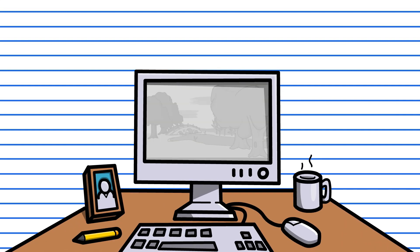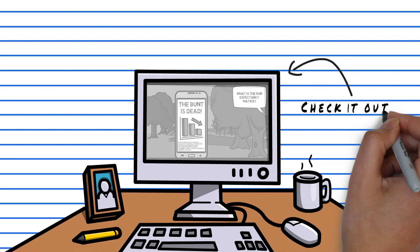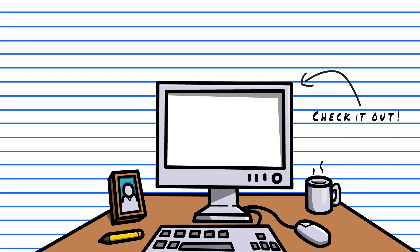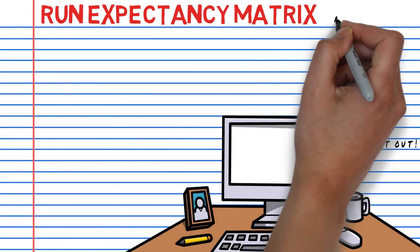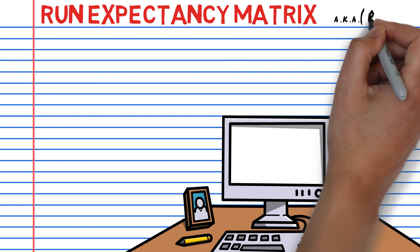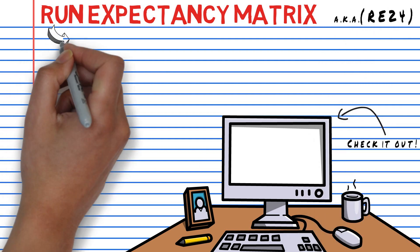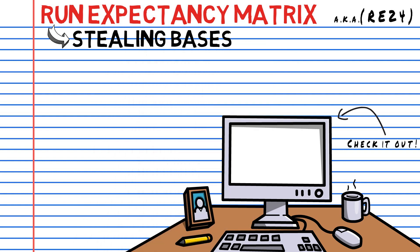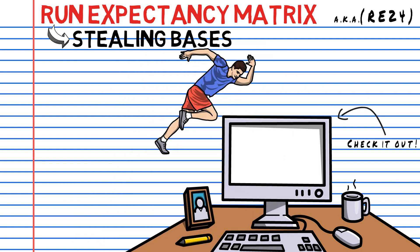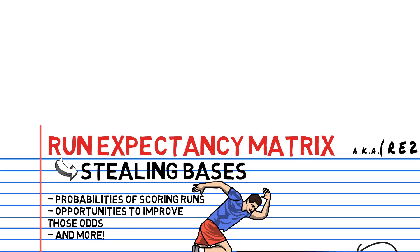In last week's video, we covered the run expectancy matrix as it applies to the bunt across all levels of play. I got some awesome feedback from you guys asking me to break down how run expectancy can be used to make better decisions on the base paths as well. So that's exactly what we're going to do today — when should you steal in order to optimize your chances of scoring runs, and how can this data help you make those decisions?